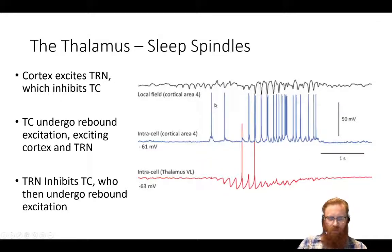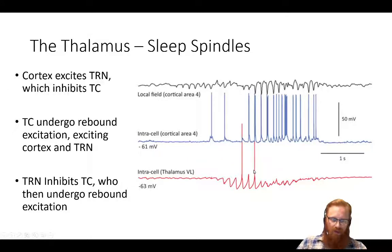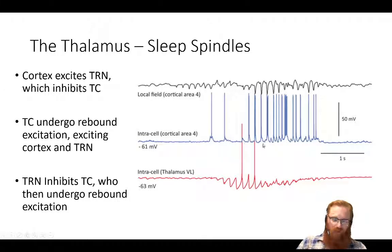Now we can understand what's going on with sleep spindles. The huge IPSPs are caused by NRT cells being heavily active, inhibiting the TC cell. Then you get the low threshold spike, which makes the cell spike, and that drives the cortical cells to depolarize. Some of those cortical cells then send a signal back to the NRT neurons, roughly coincident with thalamocortical input, exciting the NRT neurons, which then inhibit the TC neuron again, and as that inhibition wanes, the cell spikes again.